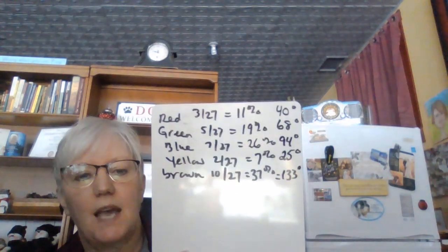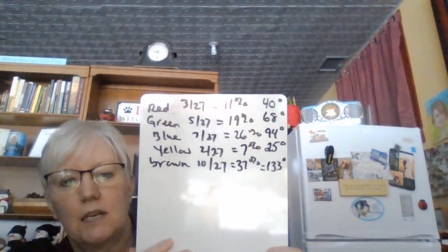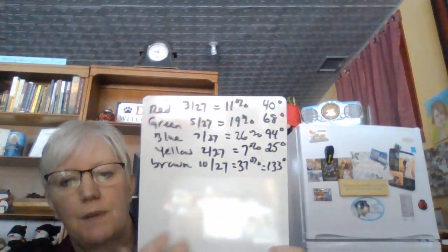These degrees have to add up to 360. So I'm going to add them up: 40 plus 68 plus 94 plus 25 plus 133 is exactly 360. You always want to double-check those, otherwise they won't fit into your graph.